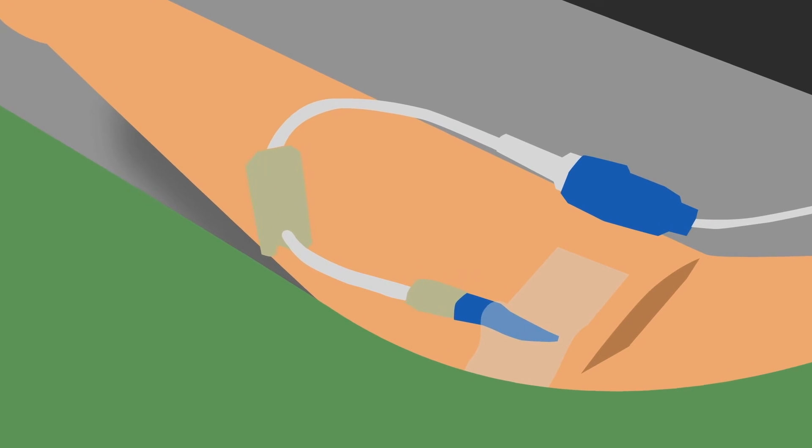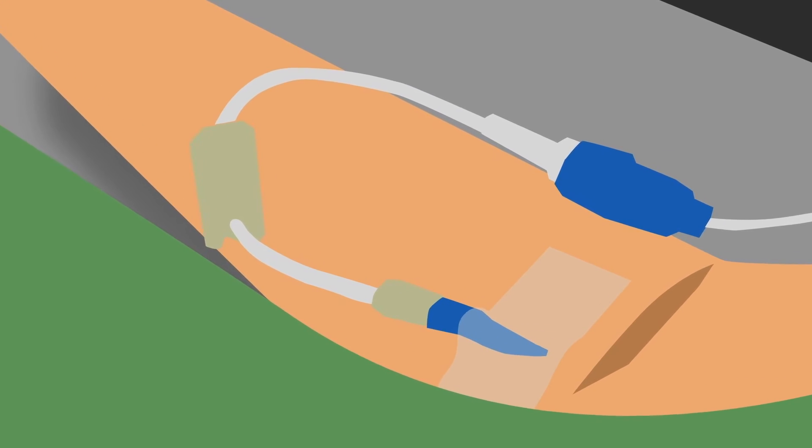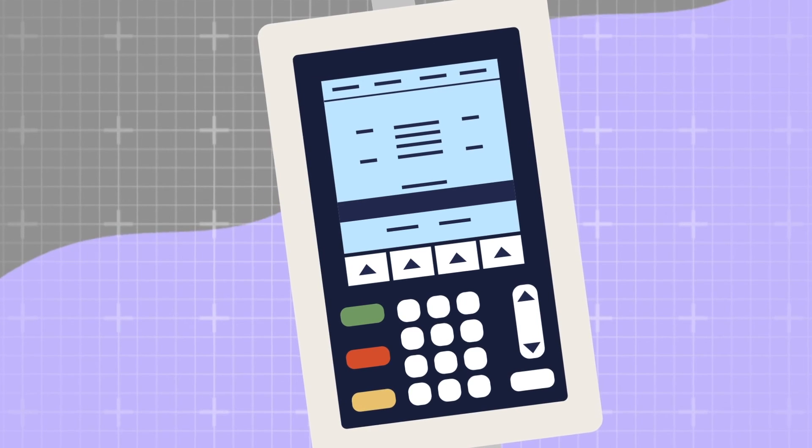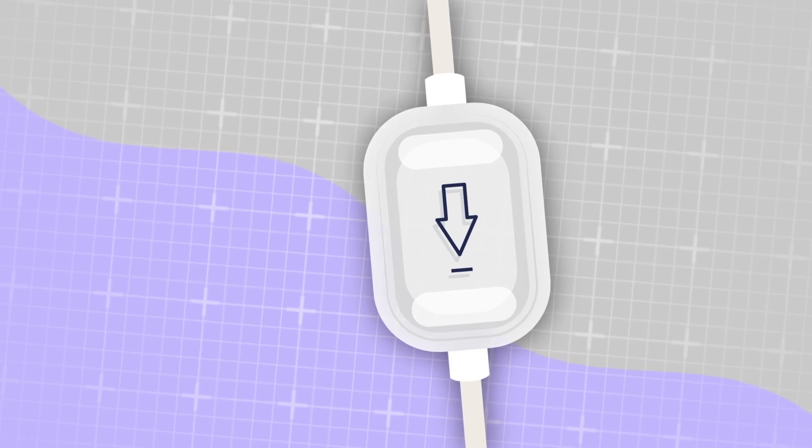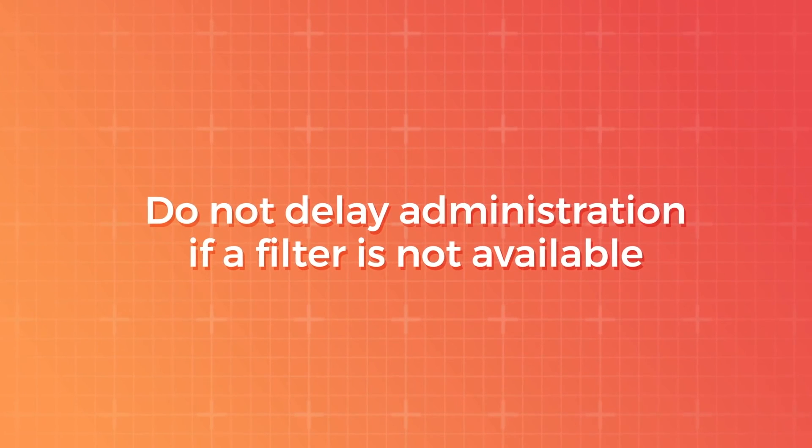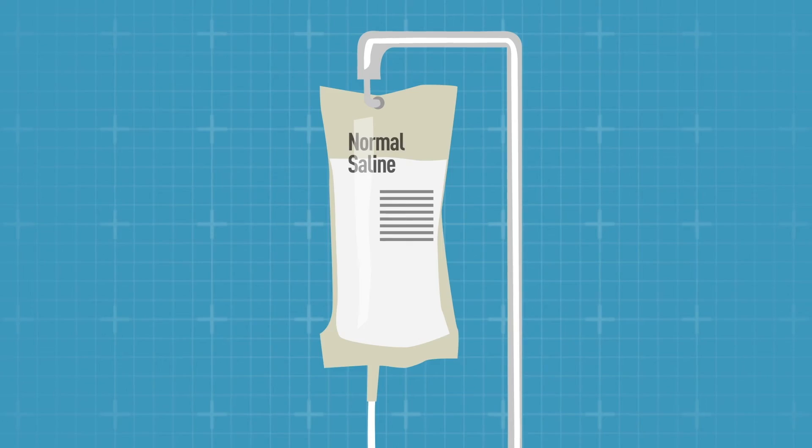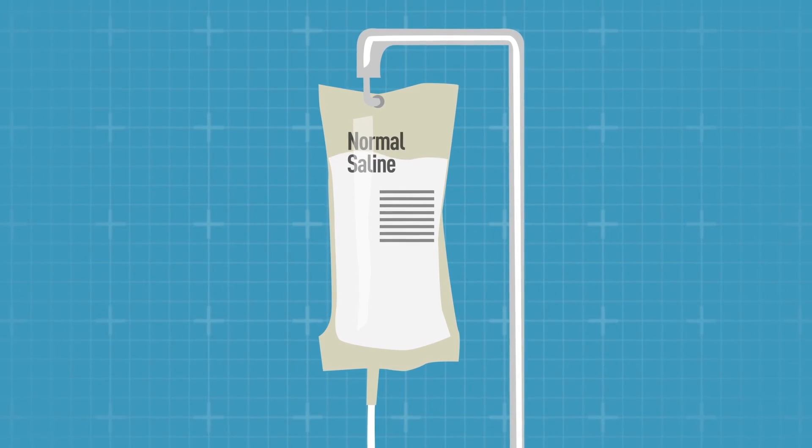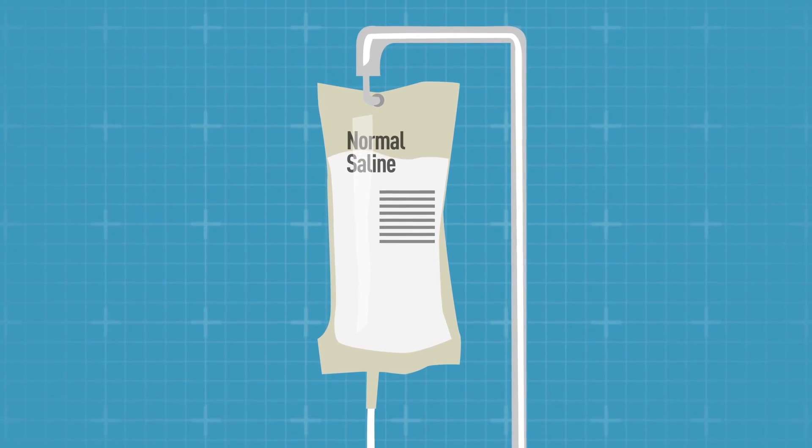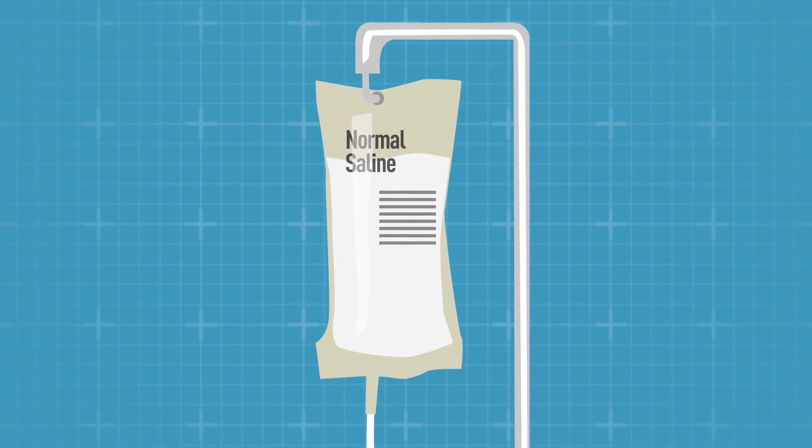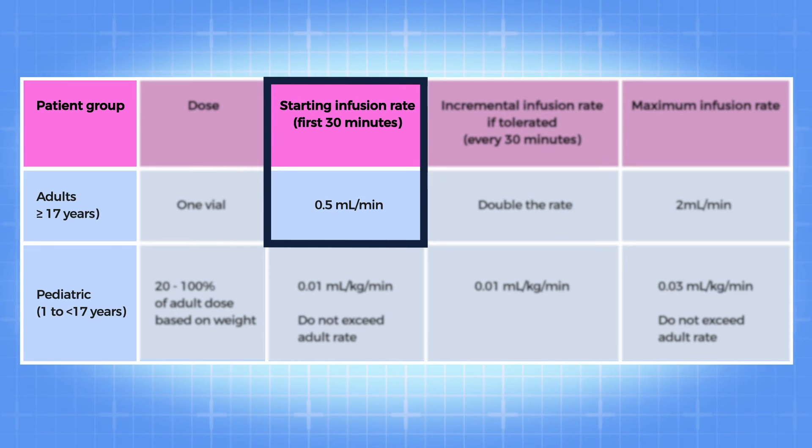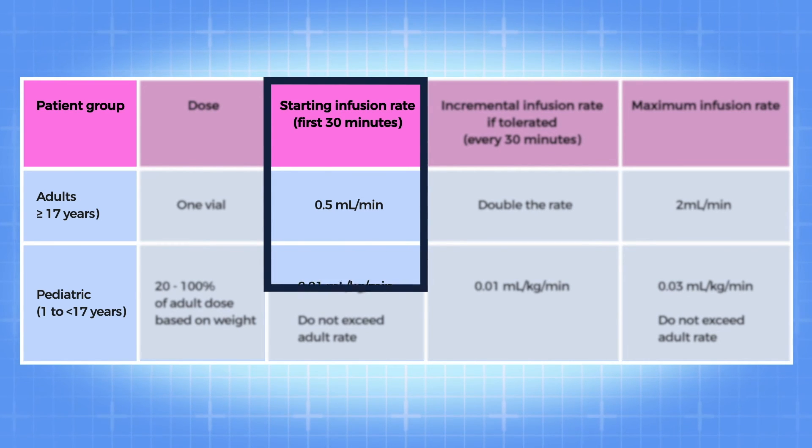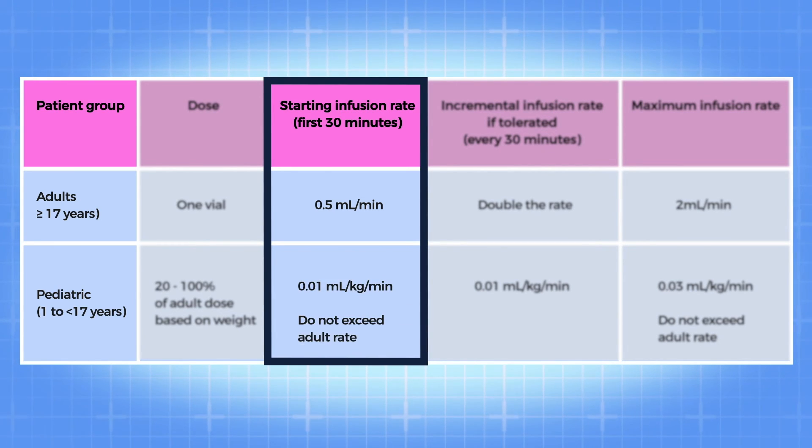Botulism antitoxin is recommended only for intravenous use. Use an IV line with a constant infusion pump and a sterile 15 micron or smaller in-line filter. Do not delay antitoxin administration if a filter is not available. Administer the diluted antitoxin solution by slow IV infusion, starting with the recommended rate for the patient's age. For adults age 17 and older, this is 0.5 milliliters per minute. For children, it is 0.01 milliliters per kilogram per minute.